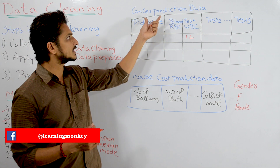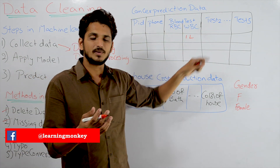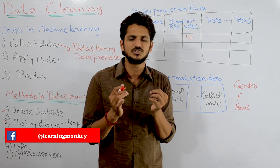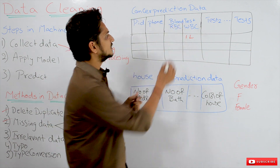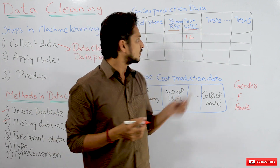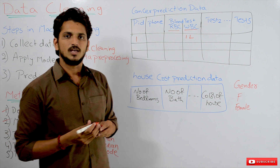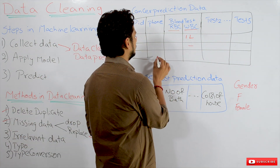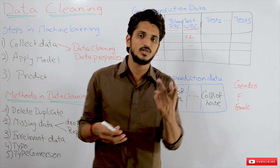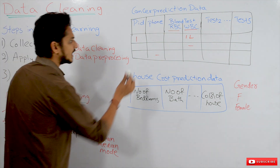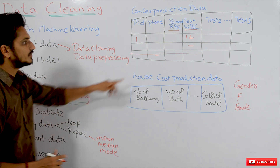The next method is handling missing data. Let's take an example. Suppose we are working on a cancer prediction data set. In this dataset, we have patient ID, phone number, and results from different tests — for example, a blood test checking red blood cells and white blood cells count. If we are having missing data in some records, what we have to do depends on the situation: either we drop that missing data point entirely, or we replace the missing data.